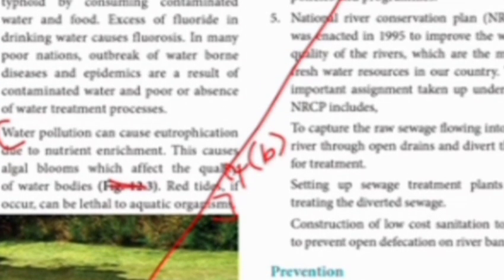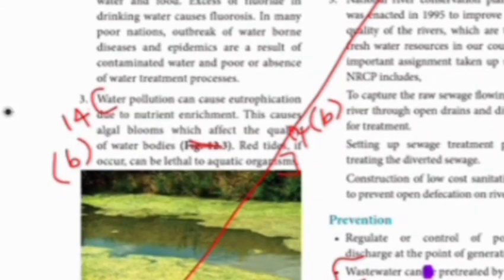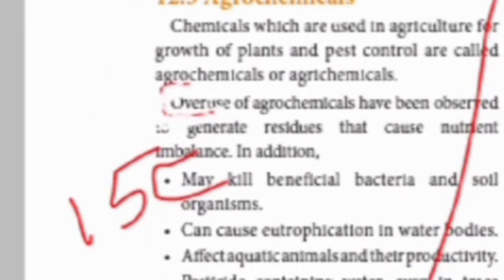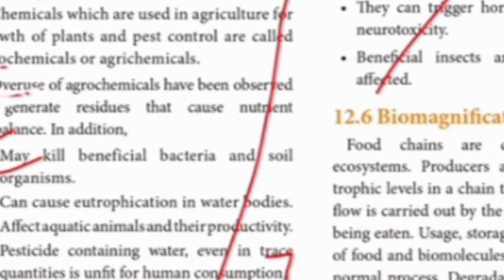15th one is on page 209. 15th one on page 209 — may kill. Start from there. Human consumption — that cannot be done. 15th one answer is in those points.